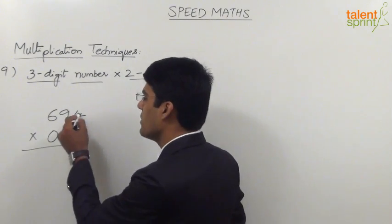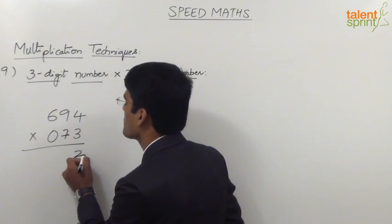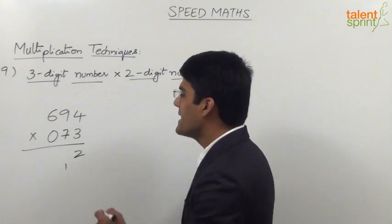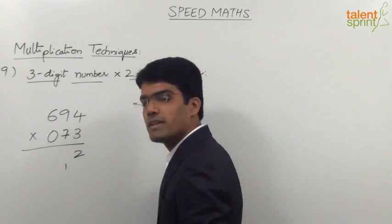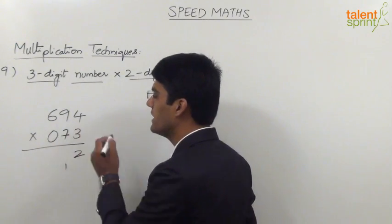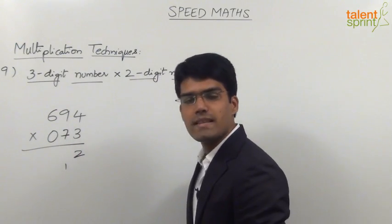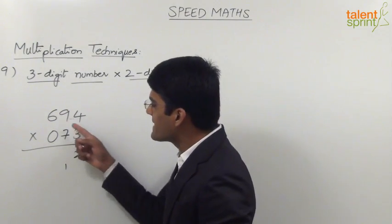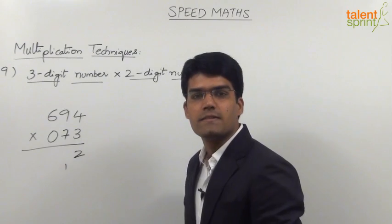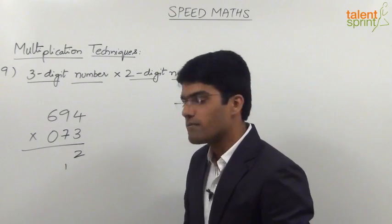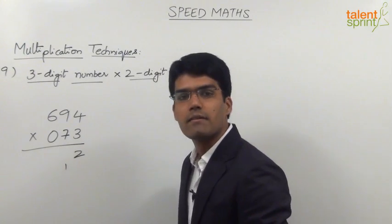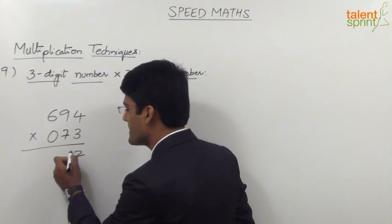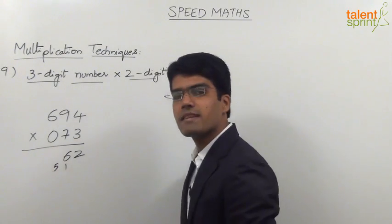The first step is 4 × 3 = 12, so 2 is in the answer and 1 is carried forward. The second step is cross multiplication of units and tens places: 9 × 3 = 27 and 7 × 4 = 28. 27 + 28 = 55, plus the carry of 1 gives 56. So we take 6 in the answer and 5 is carried forward.